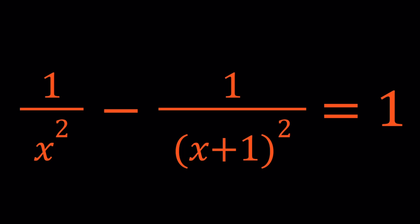1 over x squared minus 1 over x plus 1 quantity squared equals 1. And we're going to be solving for x values, both real and complex. We're also going to be taking a look at the graph, which explains the intersection points of two functions. Ready, set, go.